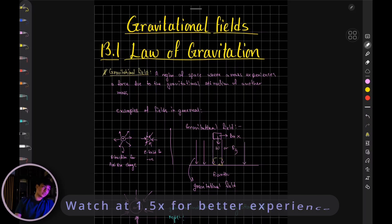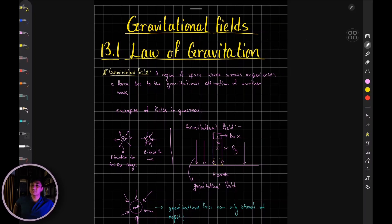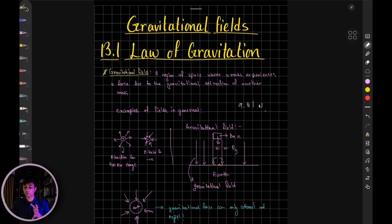In general, we know that every object — be it you, be it a pen — has a weight, and it has that weight due to gravity acting on it. On planet Earth we have a gravitational field acting on us, which is why we're able to walk around. That amount of gravity turns out to be 9.81 — that is, 9.81 newtons of force per unit mass.